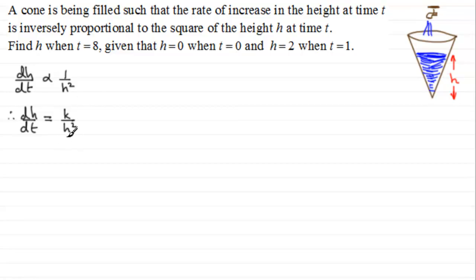Now we solve this differential equation by separating the variables. If we separate the variables, putting the h's on one side and the t's on the other, we end up with h squared dh equals k dt.